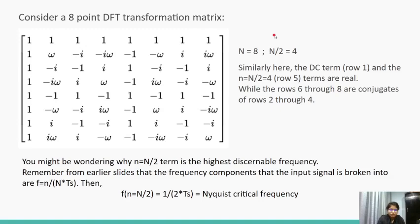It is also true for any N-point DFT. Consider 8 point DFT matrix transformation. The capital N by 2 is 4. Same as before, here we see that the DC term, row 1, is real. The small n equals 4 term, which is capital N by 2 term, which is the fifth row, is real. While the rows 6 through 8 are conjugates of the rows 2 to 4.